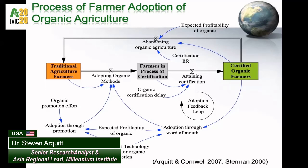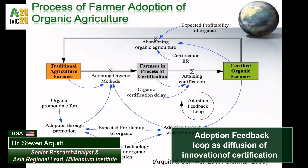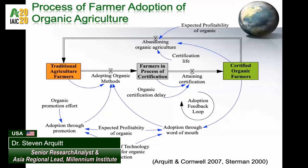Note that if organic agriculture does not continue to be profitable, some farmers may revert back to traditional agriculture. There is an adoption feedback loop shown, which drives adoption by word of mouth and the social phenomena of doing as your neighbors. Over time, this feedback loop is expected to be the principal driver of adoption. This structure is known as diffusion of innovation.